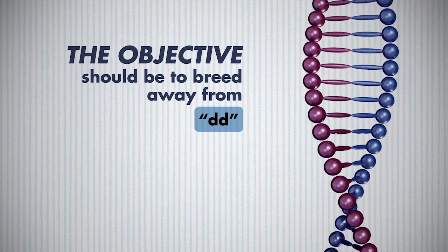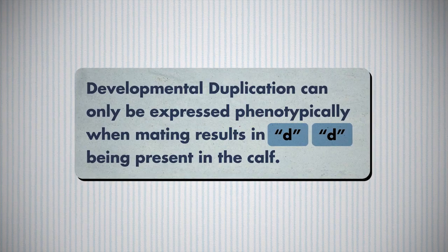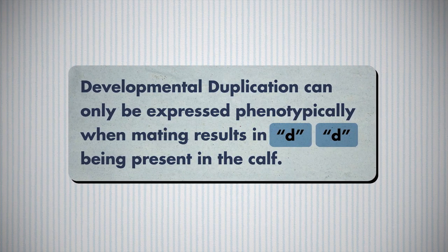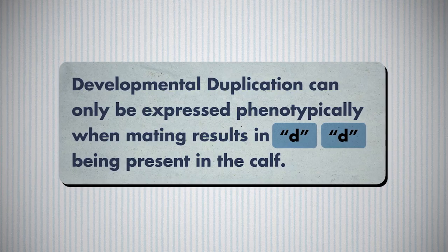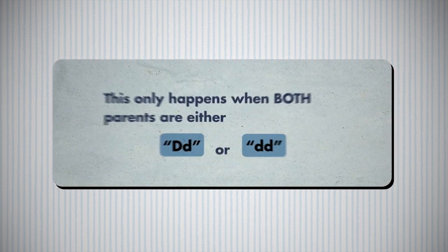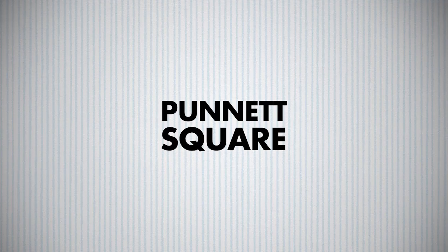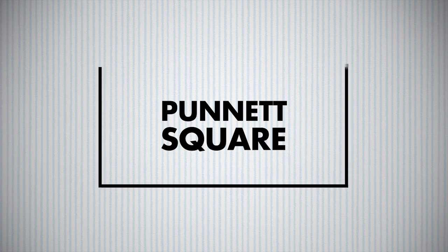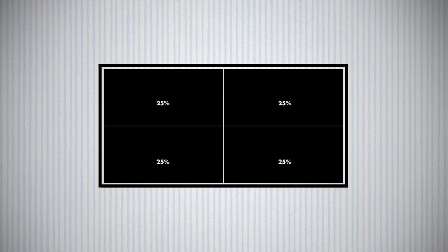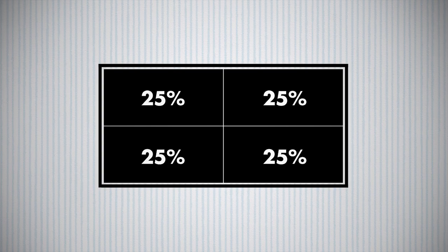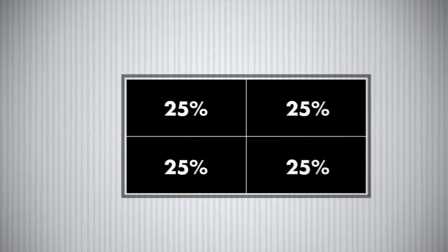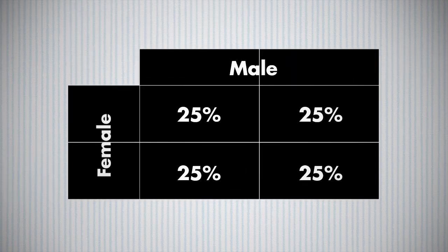The objective in your cow herd should be to breed away from these little d's in your matings. Developmental duplication can only be expressed phenotypically when the mating results in two copies of the little d's being present in the calf, and this only happens when both parents are either DD carriers or DD affected. To determine the outcome of specific matings, use a Punnett square — a square with four quadrants inside it. Each quadrant represents a probability of one-fourth, or 25%. Generally, the male is placed on top and the female on the left.